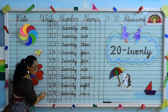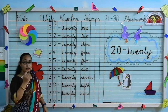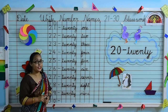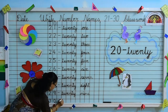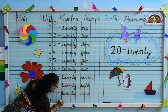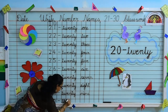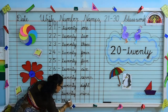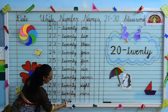Yes kids, what comes after 29? Yes. 3, 0 — 30. Kids, do you know what is the spelling of 30? Yes. T-H-I-R-T-Y, 30. So kids, speak and write. T-H-I-R-T-Y, 30. T-H-I-R-T-Y, 30.